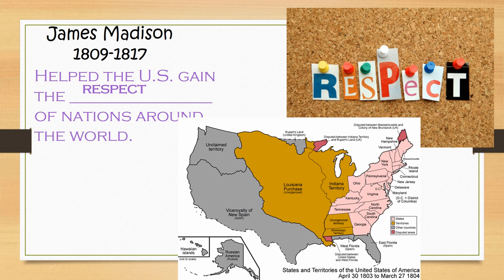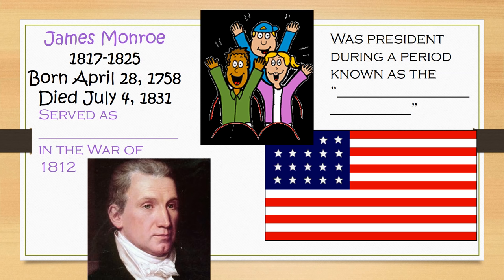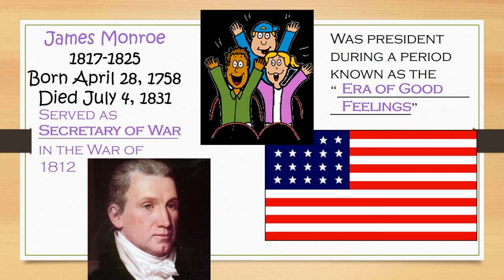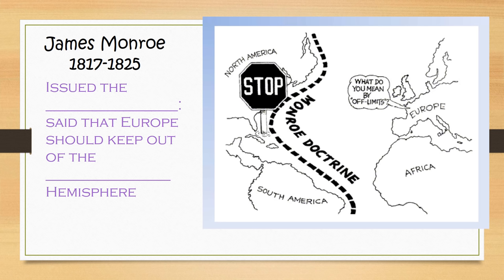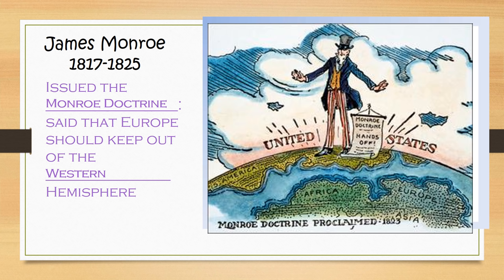Our fifth president is James Monroe. He had served as Secretary of War during the War of 1812. He was also president during a period known as the Era of Good Feelings. You can see the United States flag growing in the number of stars, reflecting the growth of the nation as more states were added to the Union. James Monroe issued the Monroe Doctrine, which said that Europe should keep out of the Western Hemisphere — basically that the United States was holding its ground, and it was 'hands off' to any European country that wanted to gobble up land in the Western Hemisphere.